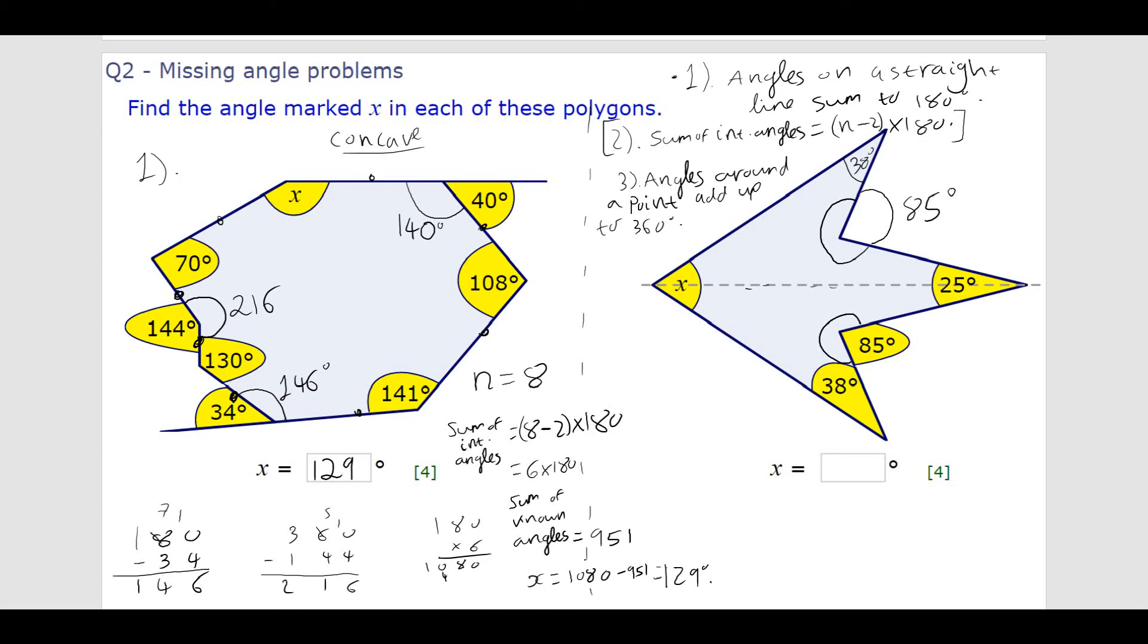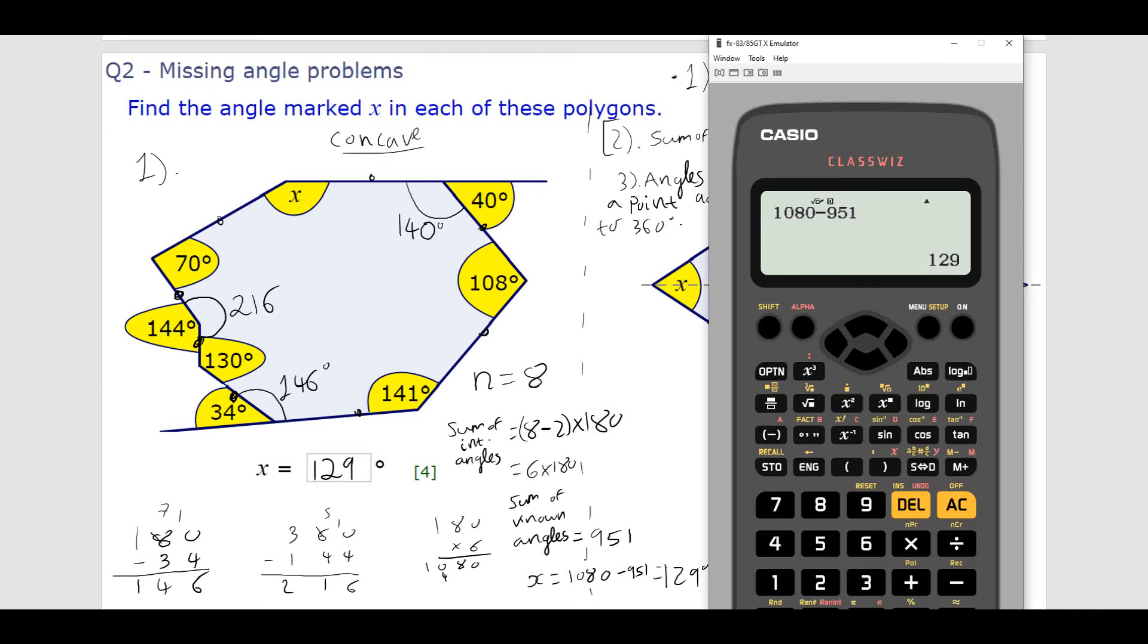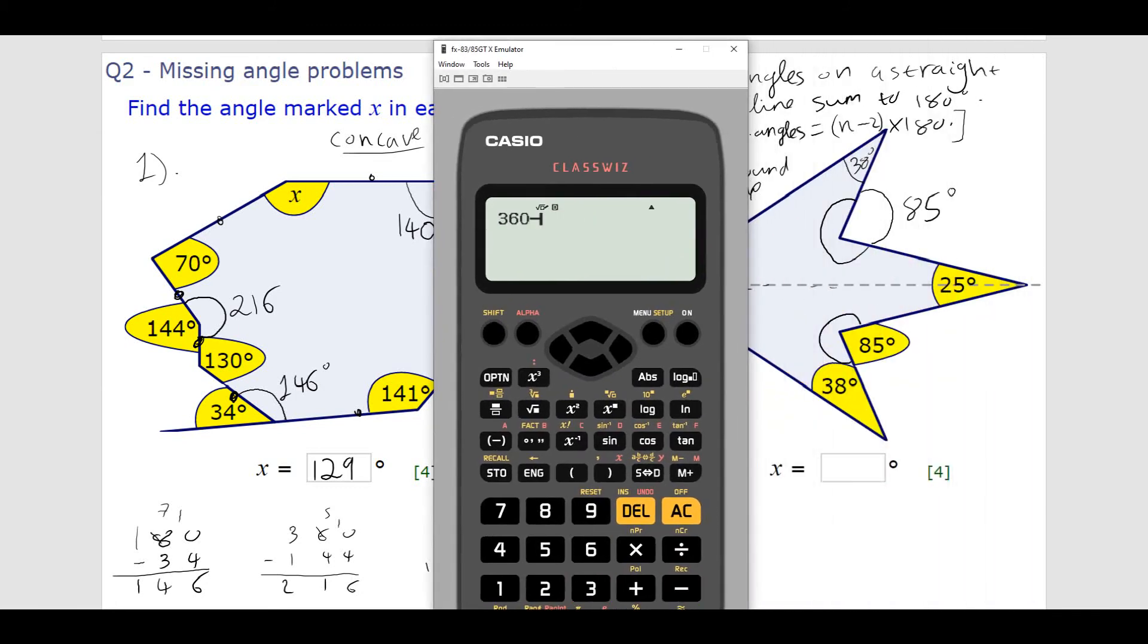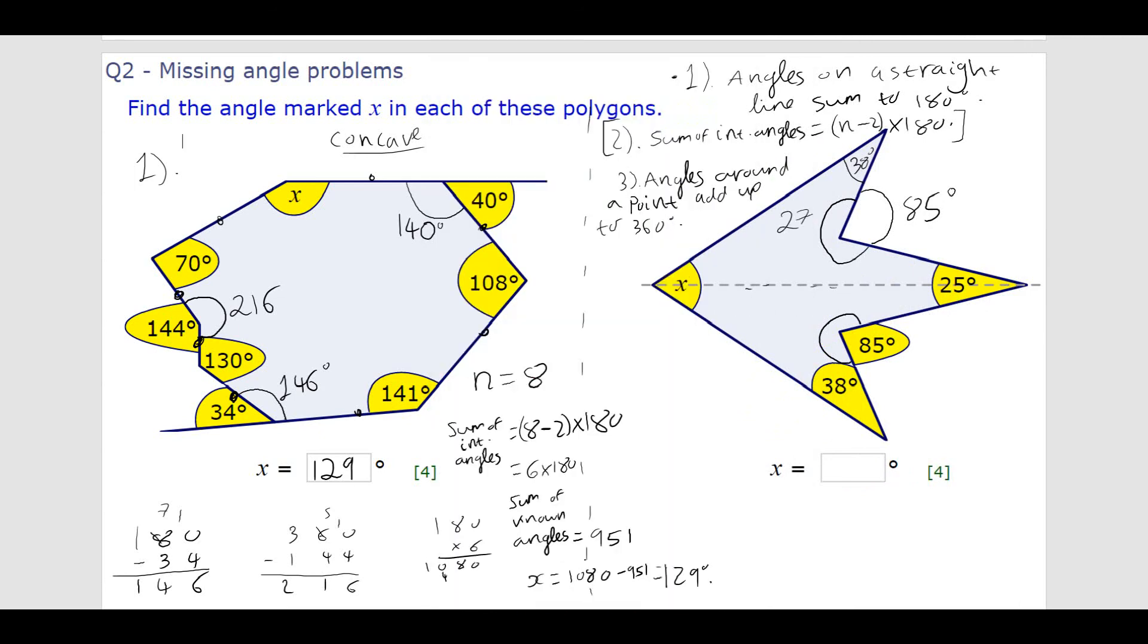And to find those, I can just do 360 minus 85. Which is going to be like 280, 280 something. 360 take away 85, 275, sorry. So, I have 275, 275. And those are my interior angles there. And we can see it is a little bit, it looks like a little bit more than 270. So, that's quite sensible. And once again, I can use the same trick. I can just add up the angles that I know, and then subtract from what the sum of the interior angles needs to be.